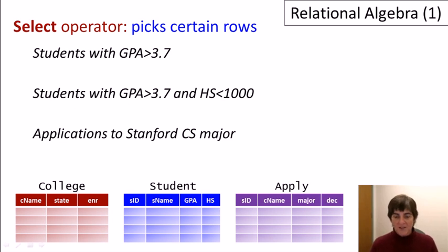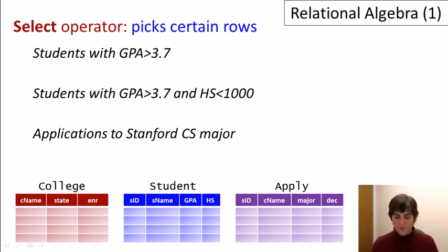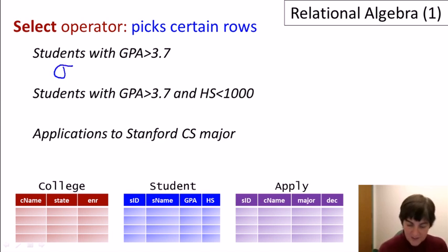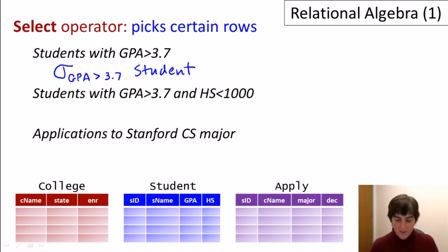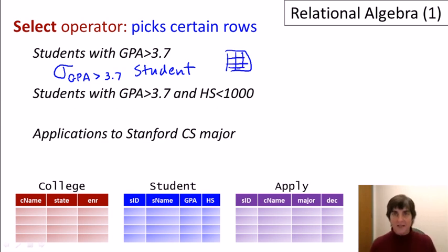The first operator is the select operator, used to pick certain rows out of a relation. It is denoted by sigma with a subscript condition that filters the rows we extract. For example, to find students whose GPA is greater than 3.7, we write sigma with the condition GPA > 3.7 applied to the student relation. This returns a subset of the student table containing only those rows where GPA is greater than 3.7.